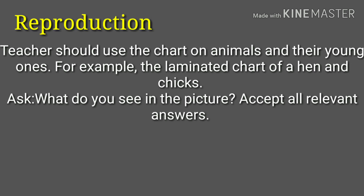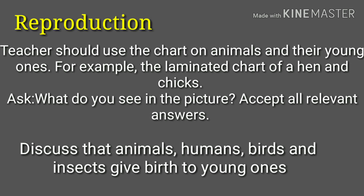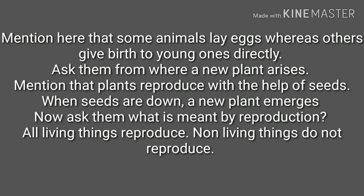The sixth characteristic is reproduction. The teacher should use a chart on animals and their young ones — for example, a laminated chart of a hen and chicks — and ask questions like 'What do you see in the picture?' accepting all relevant answers. The teacher should then discuss that animals, humans, birds, and insects all give birth to young ones, and mention that some animals lay eggs whereas others give birth to young ones directly.